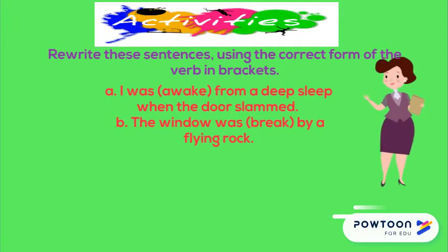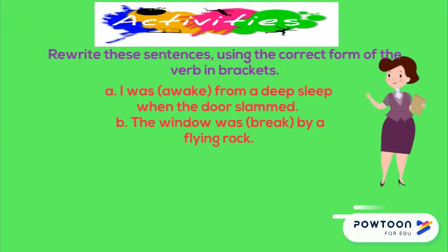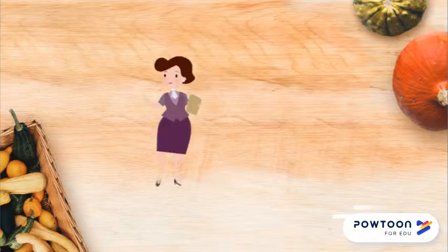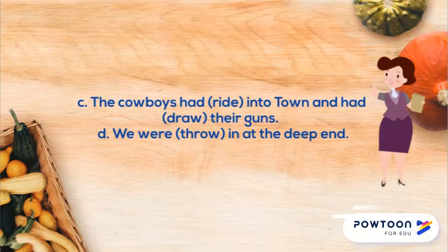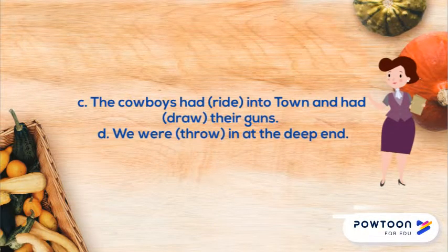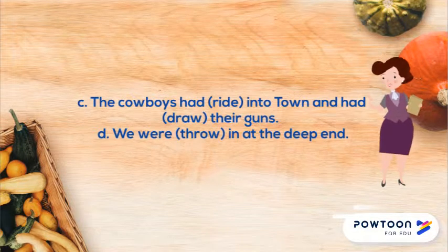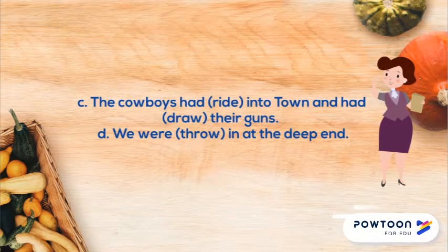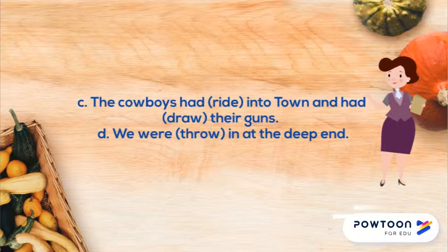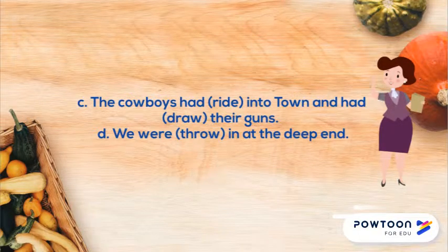A. I was awoken from a deep sleep when the door slammed. B. The window was broken by a flying rock. C. The cowboys had ridden into town and had drawn their guns. D. We were thrown in at the deep end.